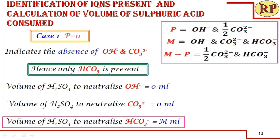Now, beyond calculating phenolphthalein and methyl orange alkalinity, if you want to identify the ions present in the water and determine how much sulfuric acid is consumed to neutralize each particular ion, there are five different cases depending on the P and M values.